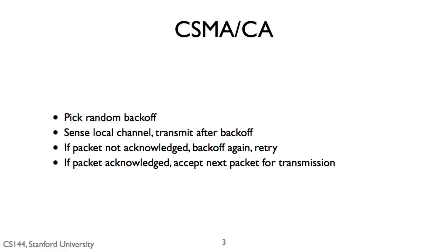So using link layer acknowledgements, this is how CSMA/CA works. So the idea is you start off with some initial random backoff. It can be very small, say if the channel is idle. You sense the local channel and you transmit after the backoff. So the basic idea here is listen. If the channel is idle, then transmit.